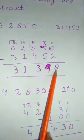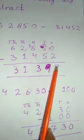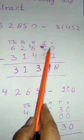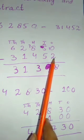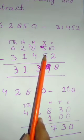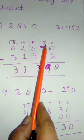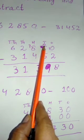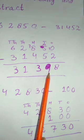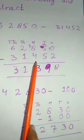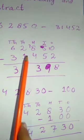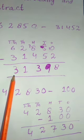Now subtract. From zero we cannot subtract two, so we will take a carry from five — it becomes four and here we get ten. From ten subtract two to get eight. From four we cannot subtract five, so we take a carry from its neighbor — it becomes fourteen and seven remains. From fourteen subtract five to get nine. From seven subtract four to get three. From two subtract one to get one. From six subtract three to get three.